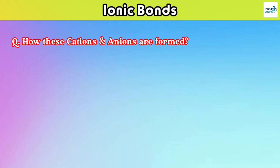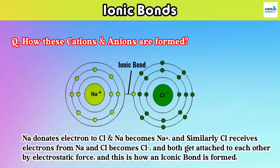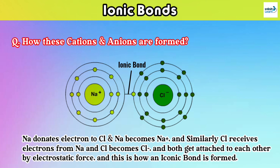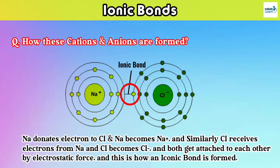Similarly, anions include mostly non-metals. Since non-metals have five to seven valence electrons in their outermost shell, they easily receive electrons and gain a negative charge, becoming anions.